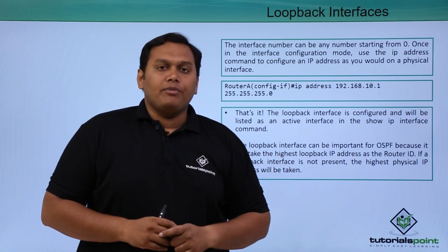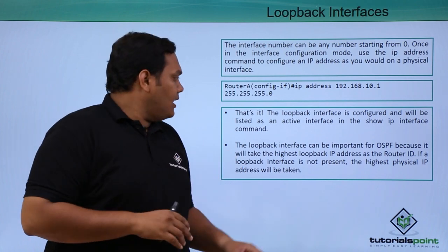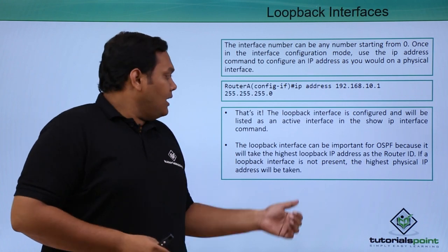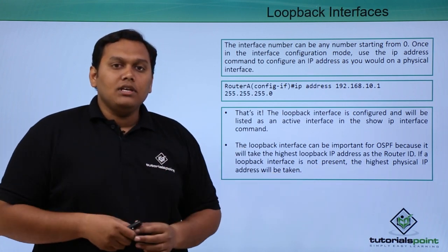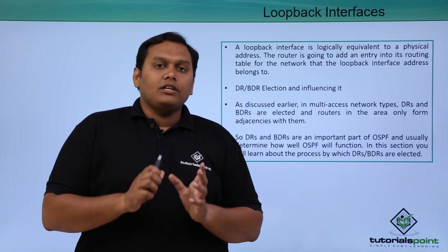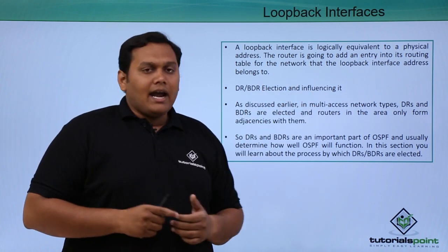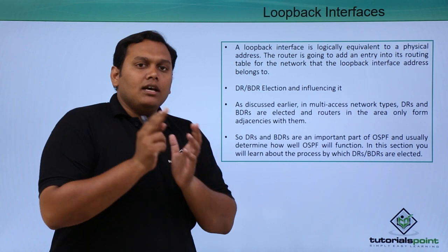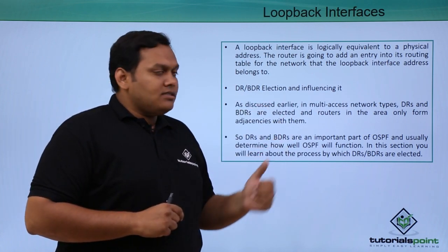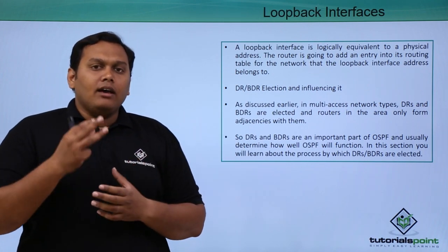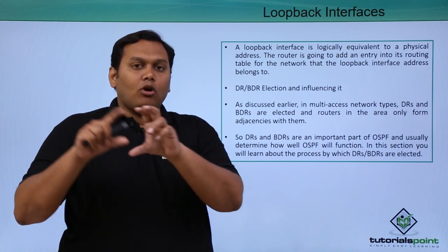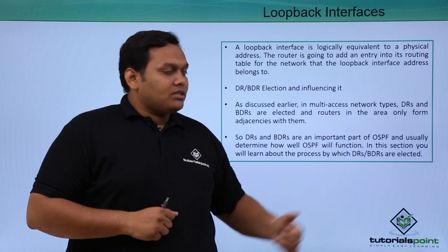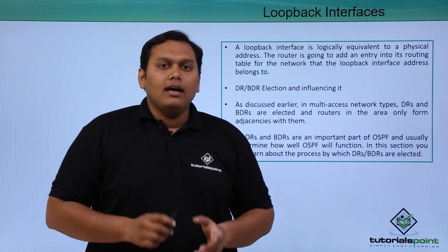The loopback interface is important for OSPF because it is used in the election of DR and BDR, and the highest loopback IP address becomes the router ID. If the loopback interface IP address is not available, the highest physical IP address will be used to choose the router ID. The loopback interface is logically equivalent to a physical IP address, and the router adds each entry to the routing table. From a troubleshooting perspective, this loopback interface is very useful, and multi-access network DR and BDR elections are all based on loopback IP address interfaces.